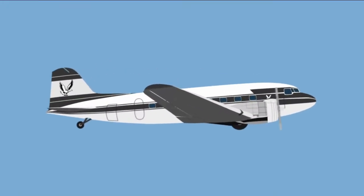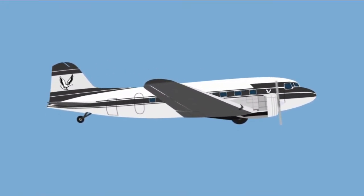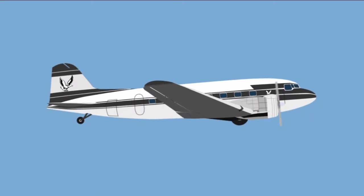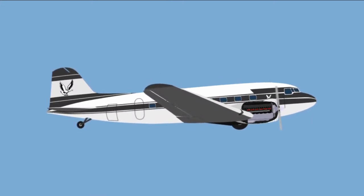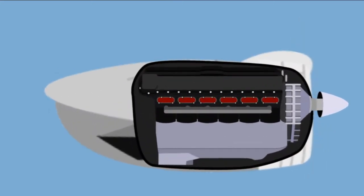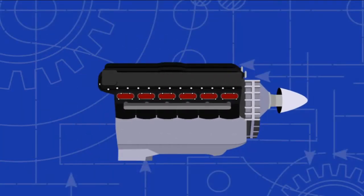The Douglas DC-3 was introduced in the 1930s and is debatably the first successful commercial airliner. The plane is driven forward by two Wright R-1820 cyclone engines, which rotate the propellers at incredible speed to provide thrust.